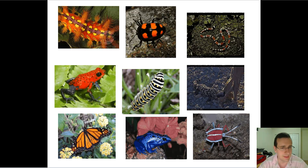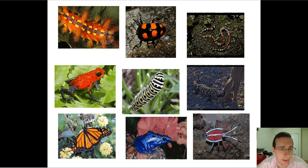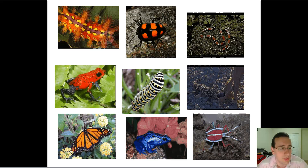The idea is that when a predator eats one of these animals, it will experience the bad taste, and it will either die or spit the animal out. Next time, it will actually learn not to do that again. If it escapes the encounter, it will remember to avoid this coloration pattern in the future.